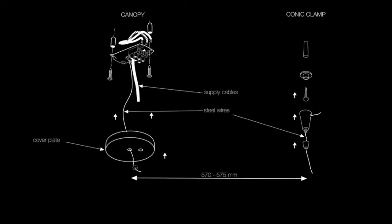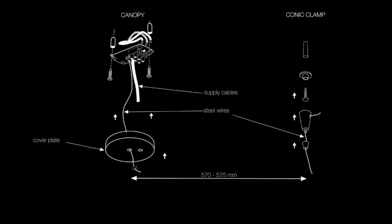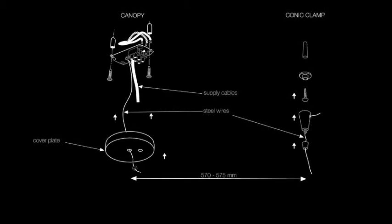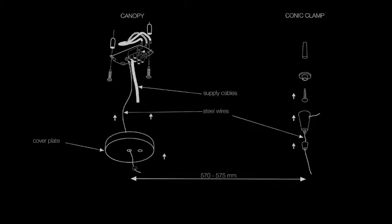Here we are with the final sequences. Fix the canopy with appropriate expansion screws and connect supply cables to the canopy clips. Fix the steel wire conic clamp at 570-575 mm from the canopy.